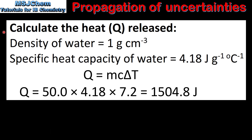Next we will calculate the heat released in the reaction using the equation Q = mcΔT. M is the mass of the water in the calorimeter, which is 50.0 grams. C is the specific heat capacity of water, which is 4.18, and ΔT is the average change in temperature, which is 7.2. When multiplied together, this gives us a value of Q of 1504.8 joules.